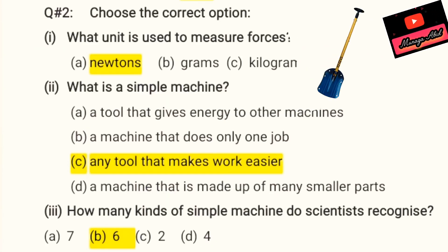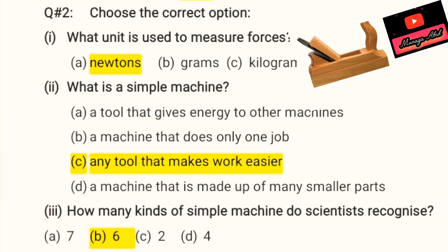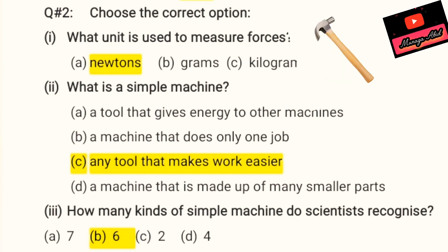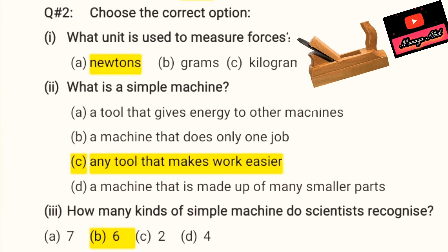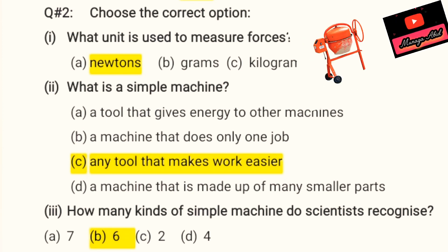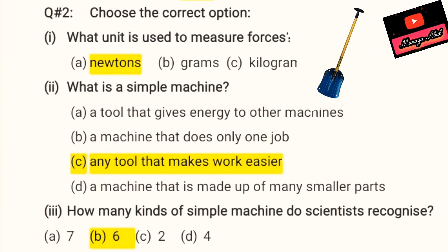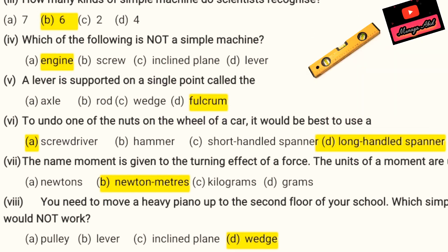Now we will move on to question number two — choose the correct option. What is the unit used to measure forces? It's newtons. Second MCQ: what is a simple machine? The answer is C — any tool that makes work easier. Third MCQ: how many kinds of simple machines do scientists recognize? The answer is B — six. To recap: lever, wheel and axle, wedge, pulley, and screw are the six simple machines.